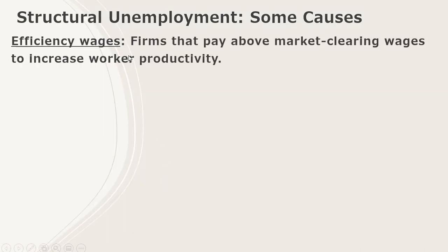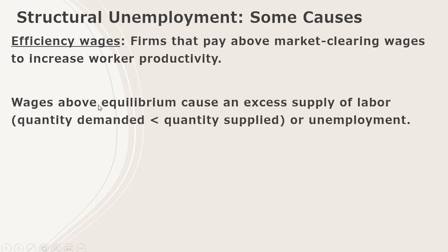Efficiency wages are another reason for structural unemployment. Firms pay above market clearing wages to increase worker productivity. Wages above equilibrium cause an excess supply of labor — the number of workers that firms want to hire at this wage will be less than the number of workers who want to get a job at this wage, and this will create unemployment.